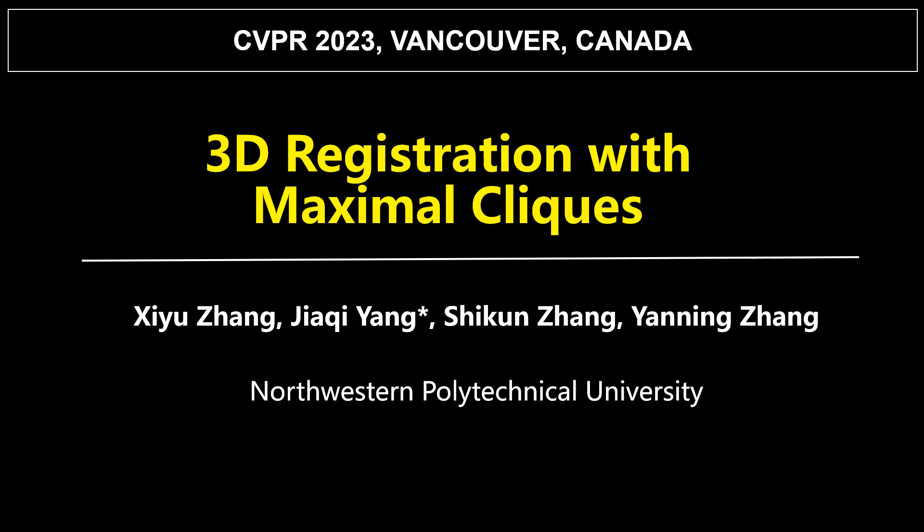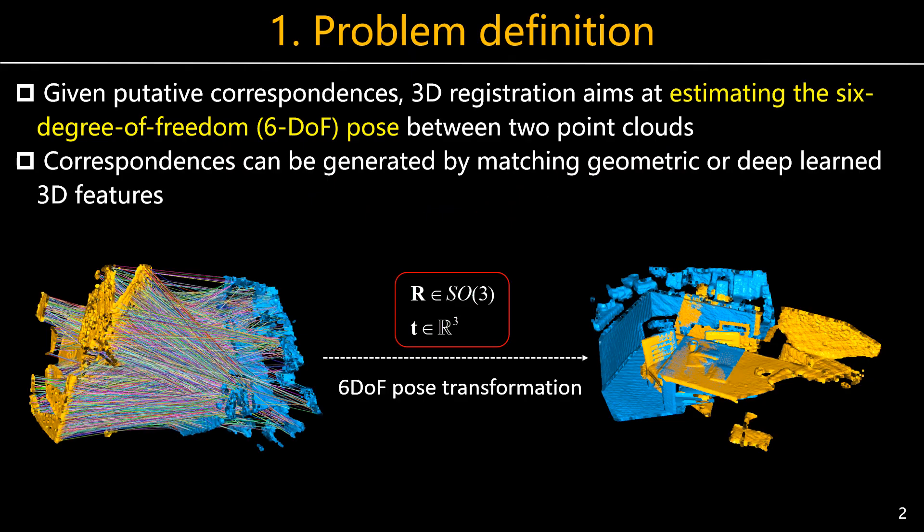This research indicates that traditional geometric methods still have great potential for 3D point cloud registration. The objective of point cloud registration is to find a 6-degree-of-freedom pose transformation that aligns point cloud sequences from different viewpoints into a unified coordinate system. In particular, correspondence-based methods are popular solutions to this problem.